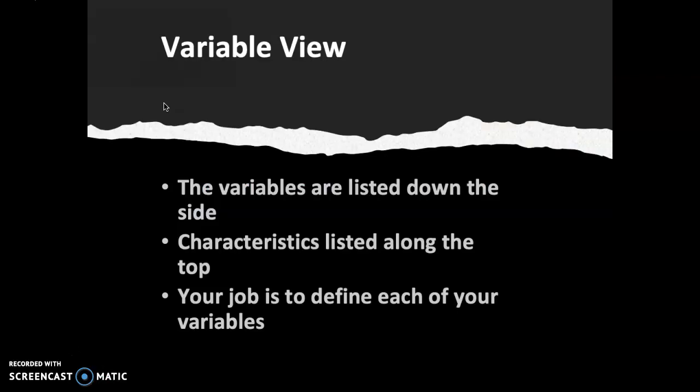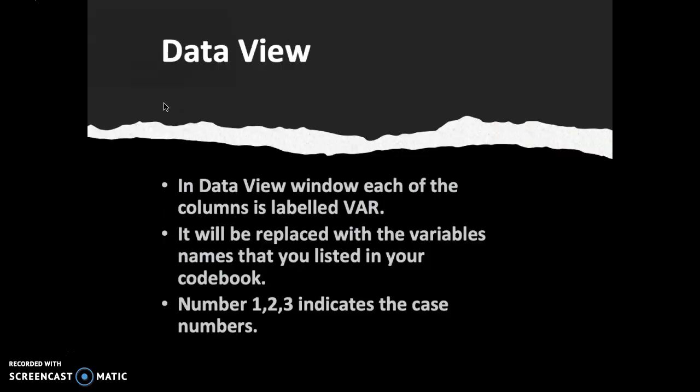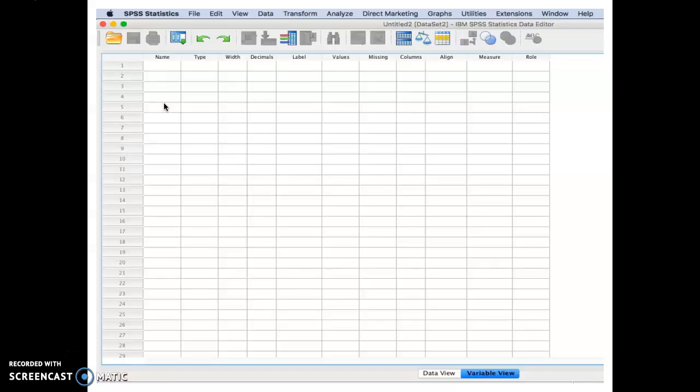So variable view, the variable view are listed down the side, characteristic listed along the top, and your job is to define each of your variable. So, this is the view of variable view. You can see that this is the characteristic of your variable, the name, type, width, decimal, and this would be the list of the variables.